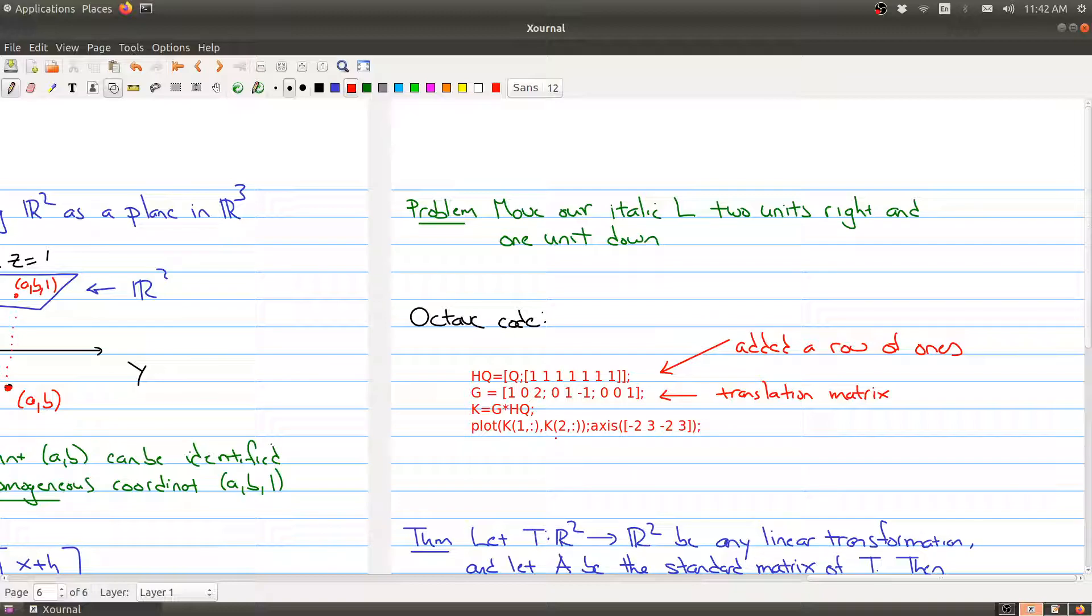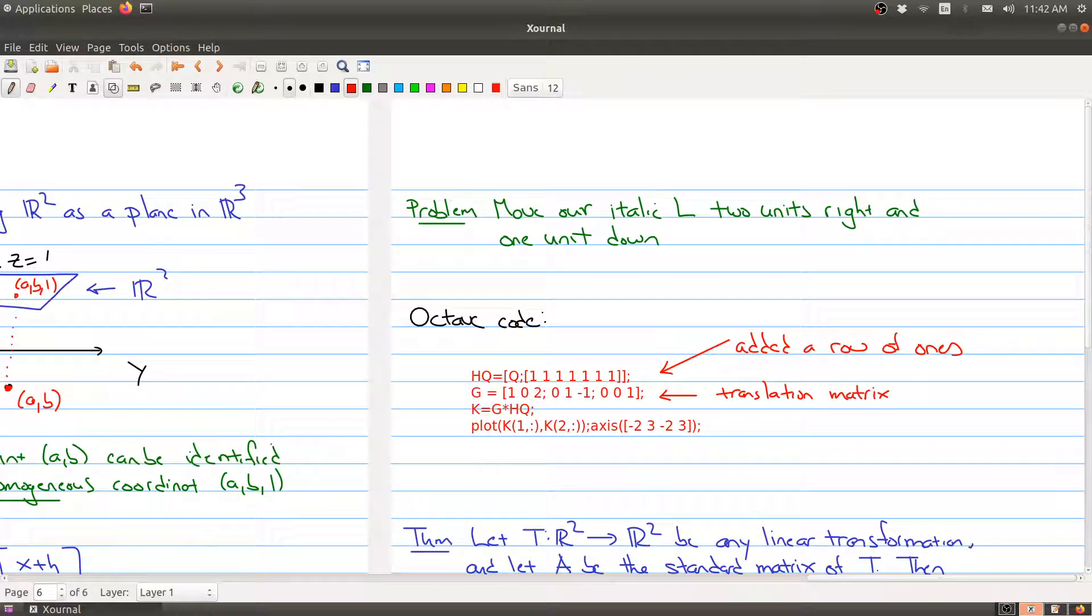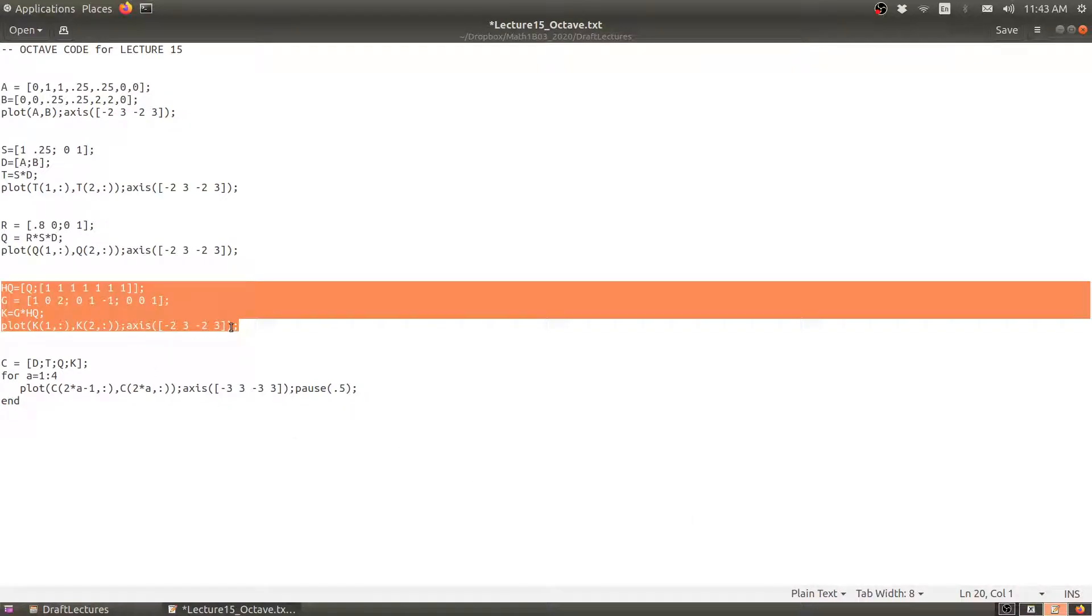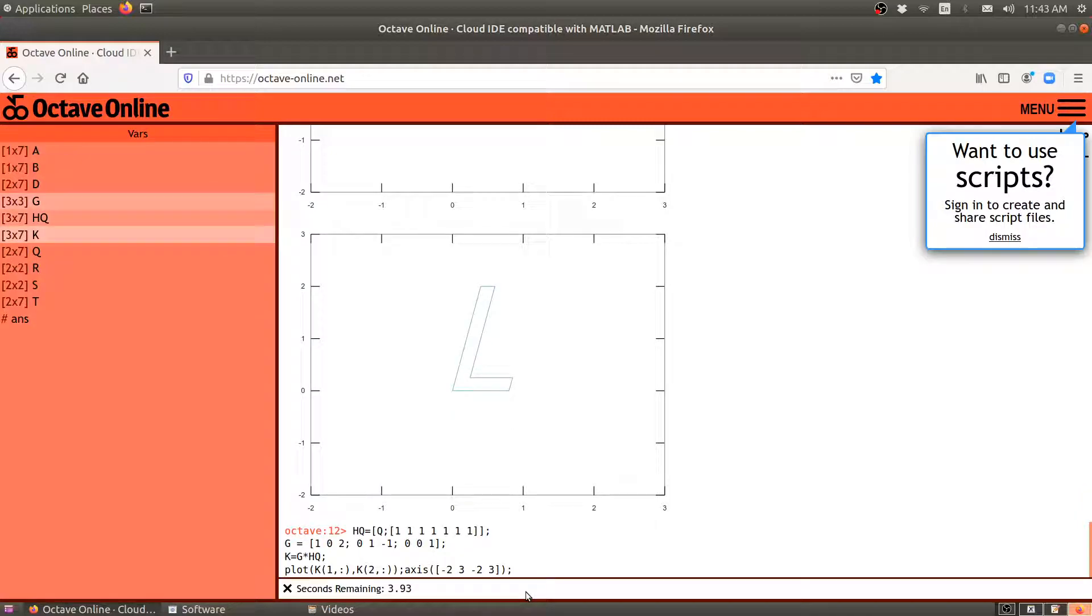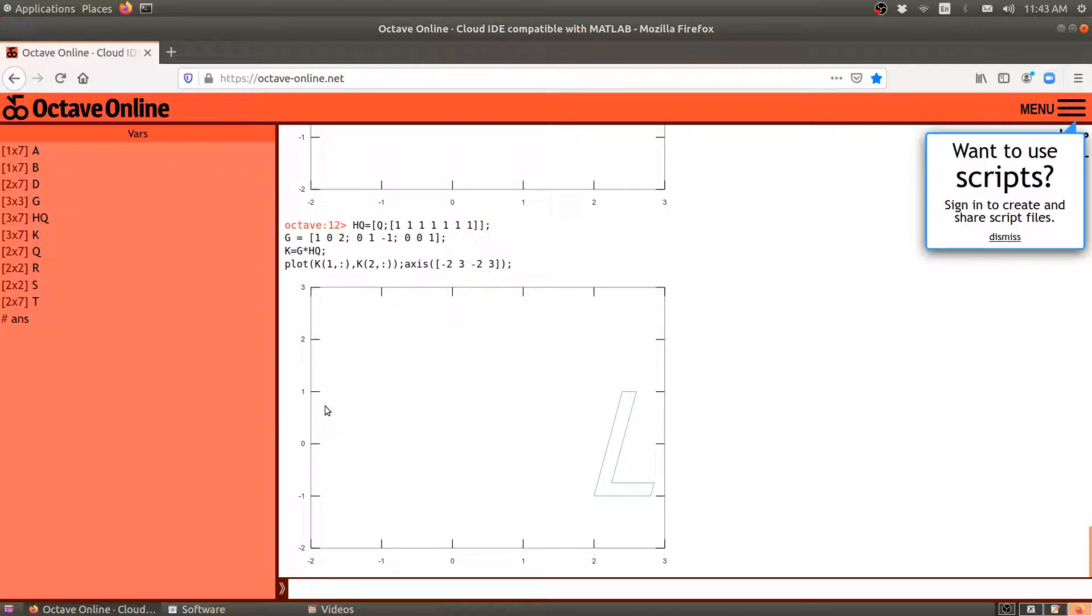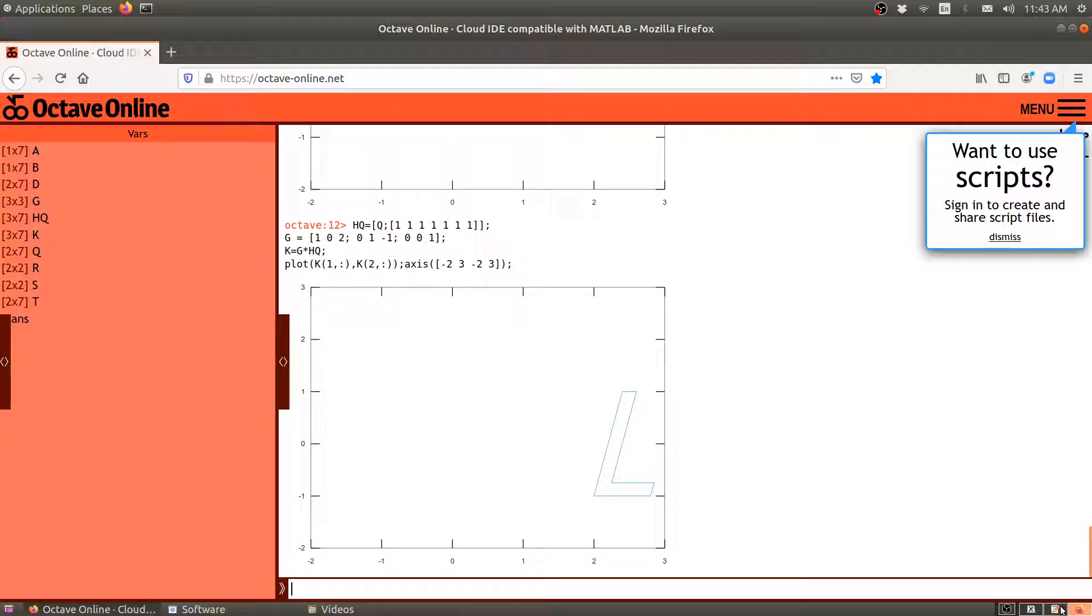Then we're going to plot the resulting coordinates, and we only need the first coordinates and the second coordinates - this is coming from the first row and the second row. So let's take my code, let's go paste it into my Octave and let it run for a sec. Notice that it started roughly here and it's moved two units to the right and one unit down. So there's where it started and this is where it ended.